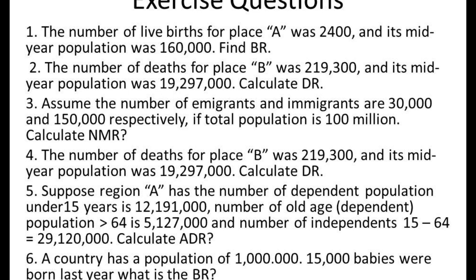Question one: the number of births for Place A was given, and its mid-year population was 160,000. Find the birth rate.